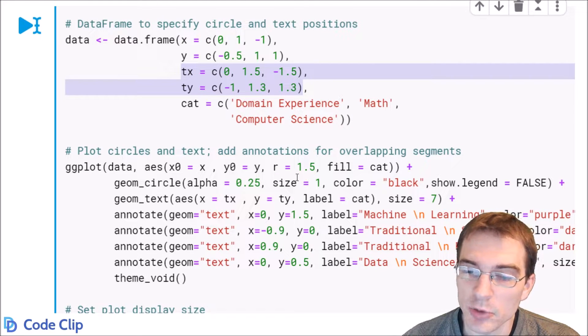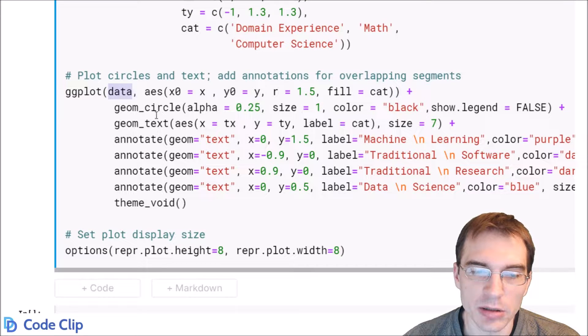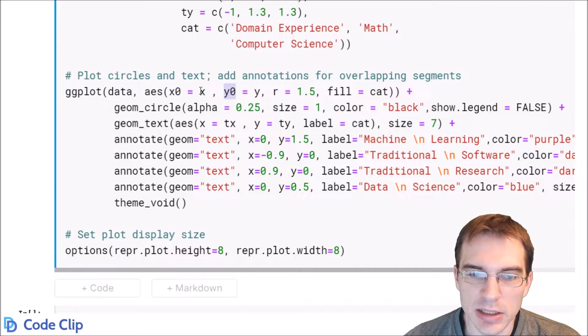And to make the plot itself, we'll use the ggplot function. So we're going to pass in the data that we created. The aesthetics for the circles are going to be called x zero and y zero. So there we're passing in the x and y coordinate columns that we made. You also specify this argument r that creates the radius of the circle, and we're going to fill them by the category.